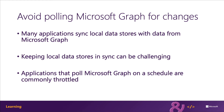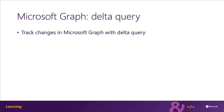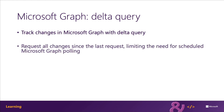One way to mitigate throttling when polling Microsoft Graph for large data sets is to use the Delta query feature in Microsoft Graph. Delta query, also known as change tracking, allows developers to request only the data that has been added, updated, or deleted since the last request. This pattern will allow the application to reduce the amount of data requested, reduce the cost of the request, and as such, will likely limit the chances of requests being throttled.